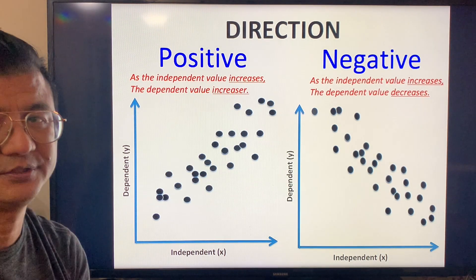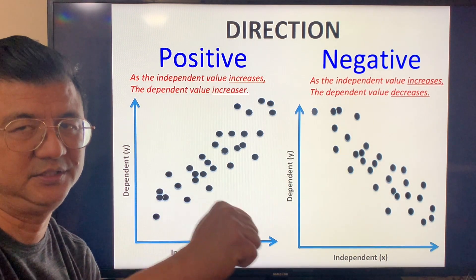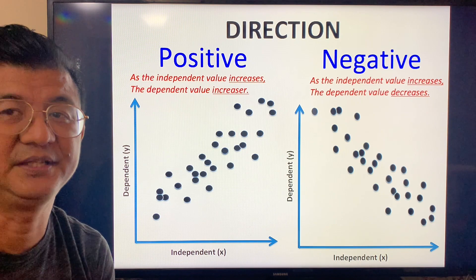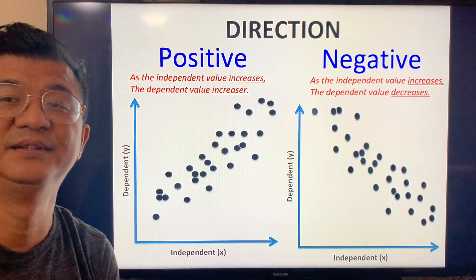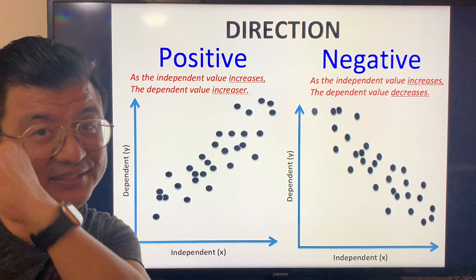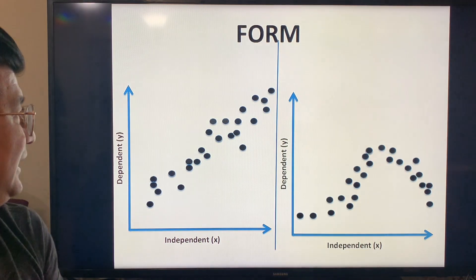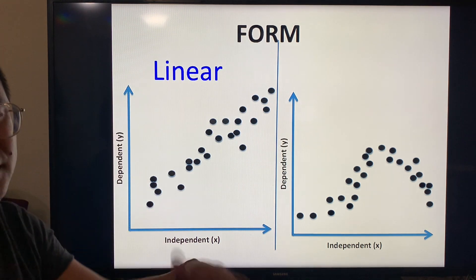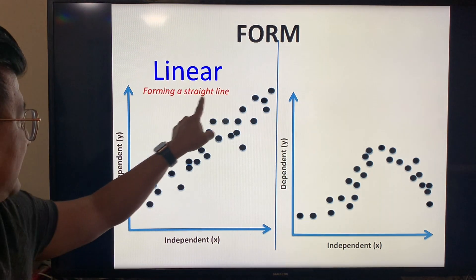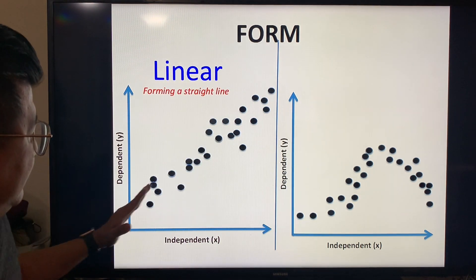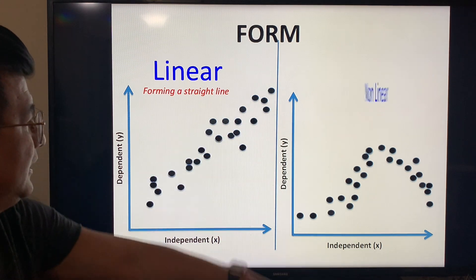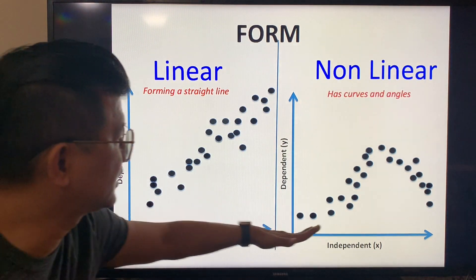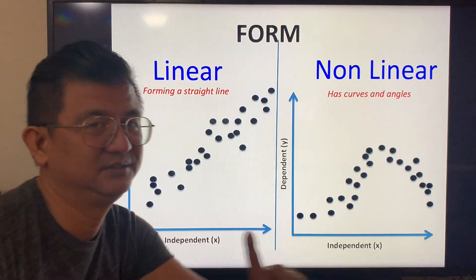Next, the form. The form can be linear — it makes a straight line. Or it can be non-linear — where you see curves or angles.